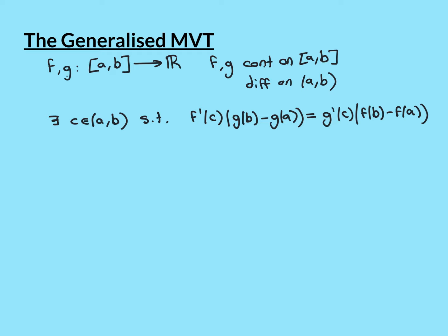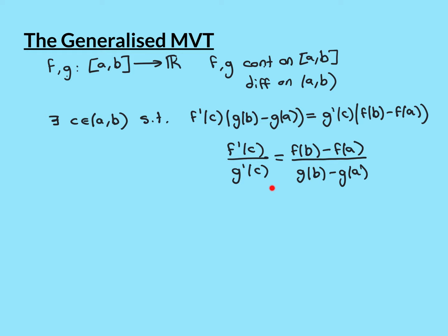With a bit of rearrangement, this statement can be rearranged into an alternative form, provided that the things we're dividing through by aren't equal to zero. If the derivative g'(c) isn't equal to zero, you can divide both sides through by it. And if g(b) minus g(a) isn't equal to zero, you can divide through by that too. That produces f'(c) over g'(c) equals f(b) minus f(a) over g(b) minus g(a).